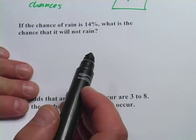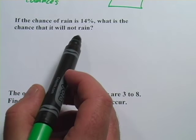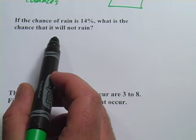Let's look at another one. This one says, if the chance of rain is fourteen percent, what is the chance that it will not rain?